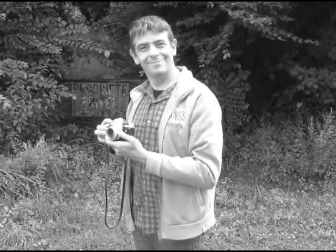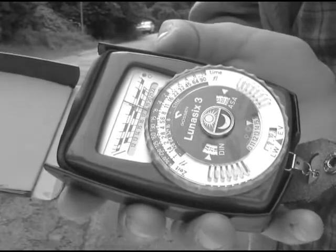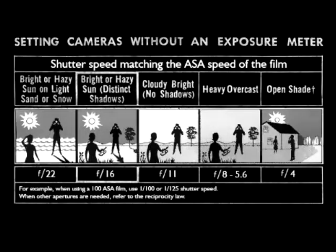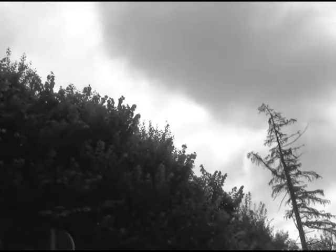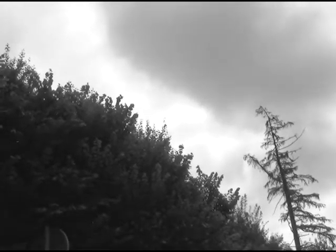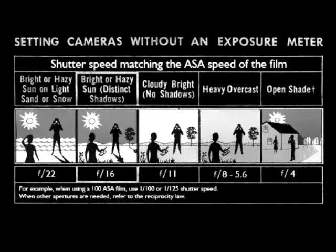Now let's talk about taking your first images. You want to select the correct shutter speed and aperture combination for the situation. You can either use a handheld light meter or refer to the tables that are often provided with the film. You simply match the shutter speed with the ASA sensitivity of your film and adjust the aperture accordingly. For instance, this weather is cloudy and pretty dark, so we're going to use a shutter speed of 1/100th of a second and an aperture of 5.6, and it will turn out real fine.